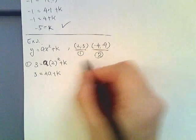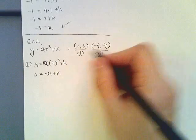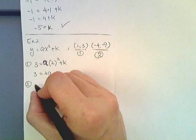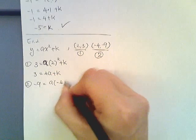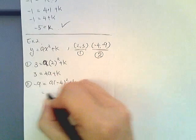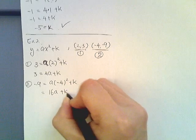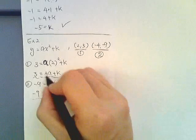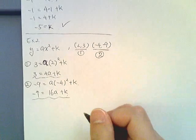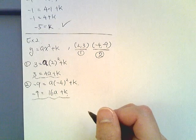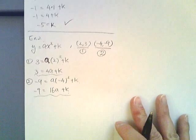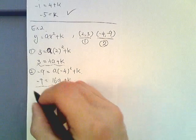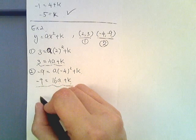Now let's take a look at the second one. Substitute it in, so we have negative 9 equals a negative 4 squared plus k, which gives me 16a plus k. Now remember I have two equations, two variables. Use substitution or elimination. That's why you should not forget anything from unit 1 or unit 2 or unit 3 more importantly. So let's use elimination.